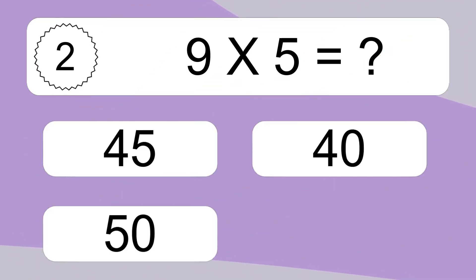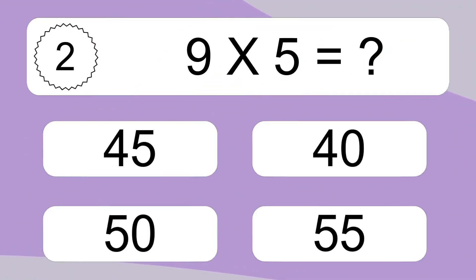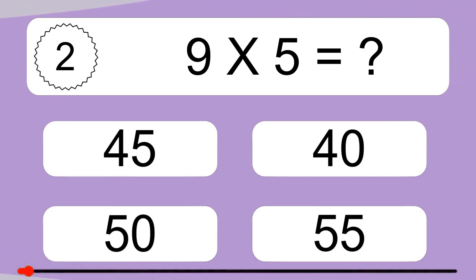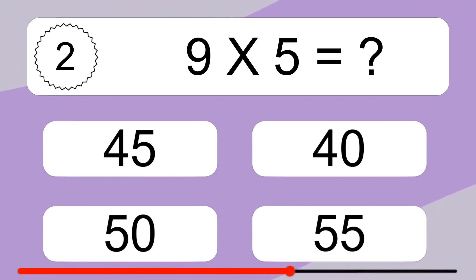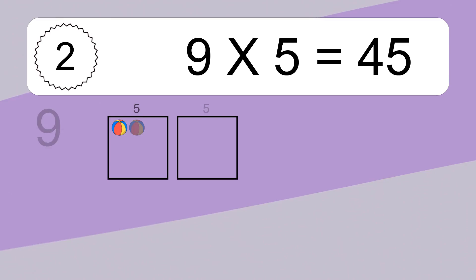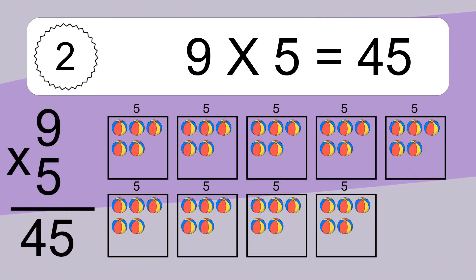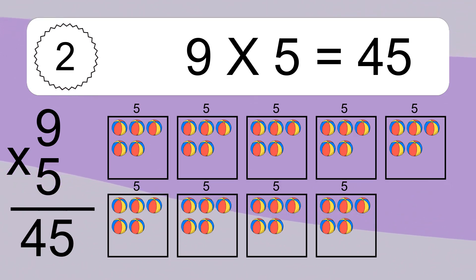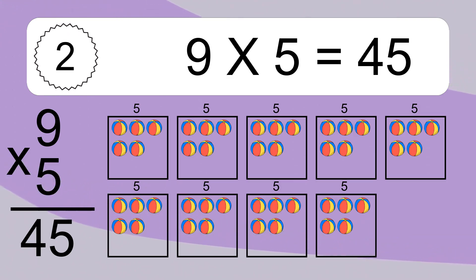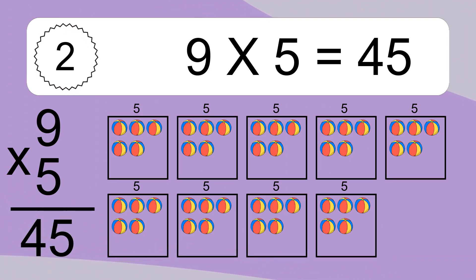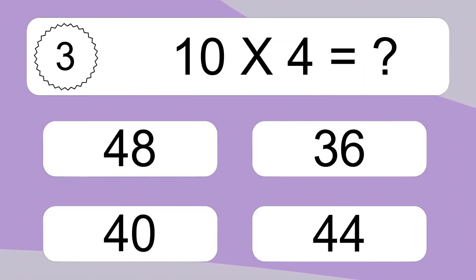9 times 5 equals what? 9 times 5 equals 45. We have 9 boxes and each box has 5 colorful balls inside. If you count all the balls in all the boxes together, you will have 9 times 5 balls. This equals 45 balls.